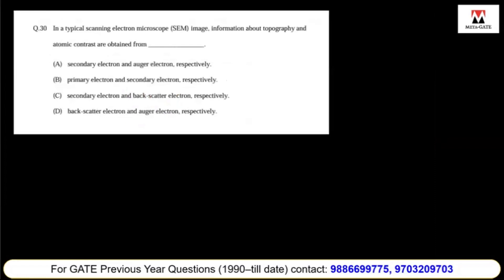In a typical scanning electron microscope (SEM), information about topography and atomic contrast are obtained. In SEM, the topography is given by secondary electrons, and atomic contrast is given by backscattered electrons. Higher atomic number gives more contrast from backscattered electrons. If you see the interaction volume, secondary electrons come from the surface, and backscattered electrons come from deeper, so secondary electrons tell you about overall surface topography.